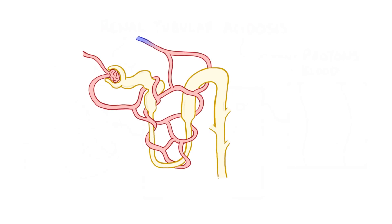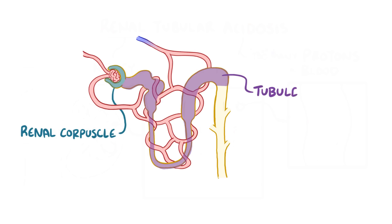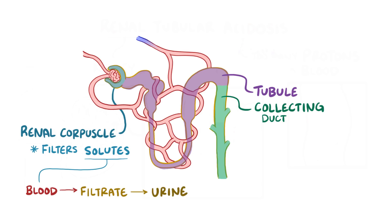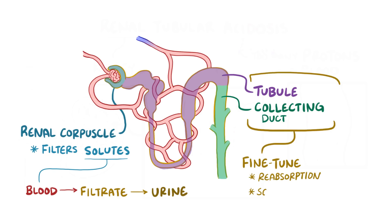The kidneys have millions of nephrons, each of which has a renal corpuscle, as well as a renal tubule that ends in a collecting duct. The renal corpuscle filters large amounts of solutes that go from the blood into the filtrate, and eventually the urine, and the renal tubule and collecting duct are responsible for fine-tuning the reabsorption and secretion of solutes to adjust the amount that ultimately gets retained by or removed from the body.